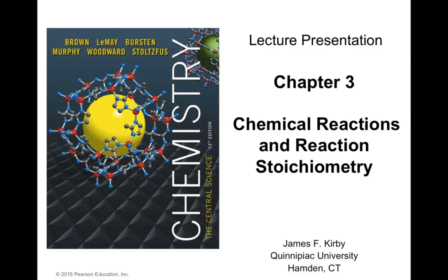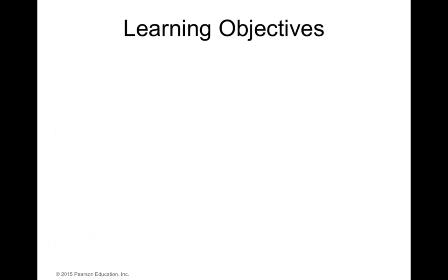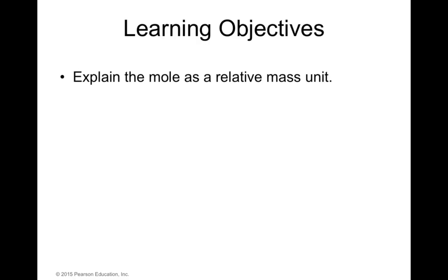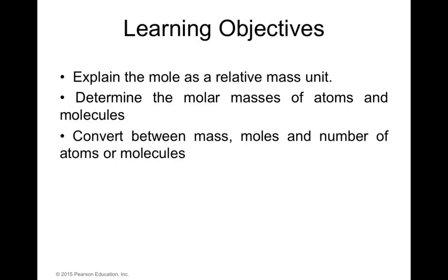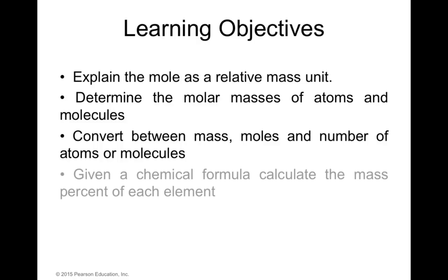Today we're going to discuss chapter 3: chemical reactions and reaction stoichiometry. The learning objectives for today are: explain the mole as a relative mass unit, determine the molar masses of atoms and molecules, and convert between mass, moles, and number of atoms or molecules.